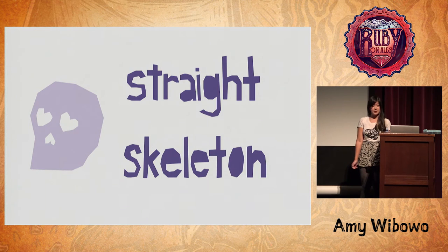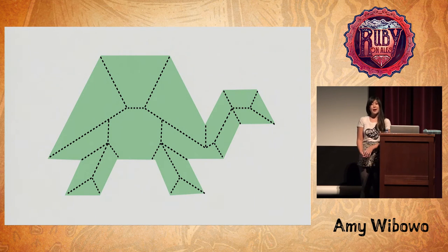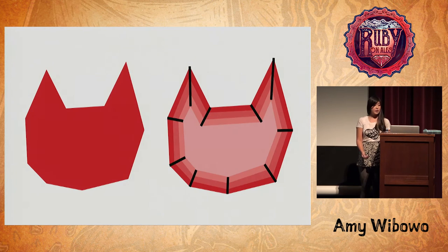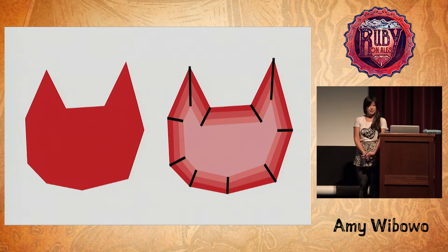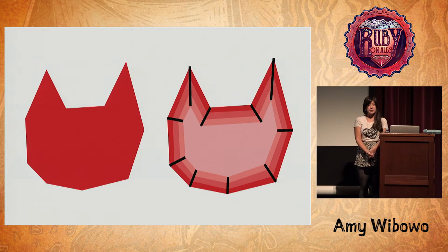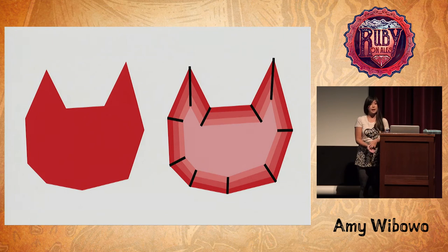It is called a straight skeleton because when you calculate it, it ends up looking like it could be the actual skeletal support structure for that object. How do you calculate it? You shrink the original shape while maintaining constant perpendicular distance from the original edges, and the path of the vertices as the shape shrinks is the straight skeleton. This path is consistent with our idea that the angle bisectors of a shape are an important component of calculating how to align the sides.